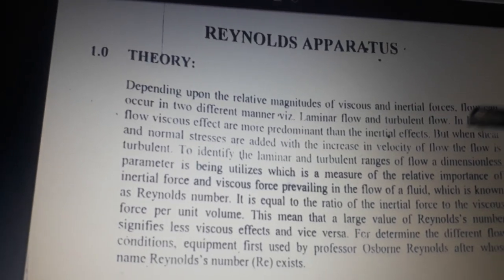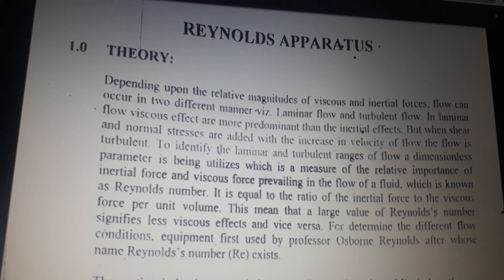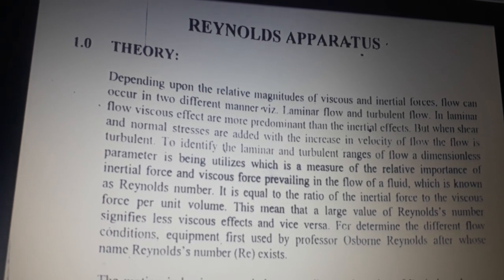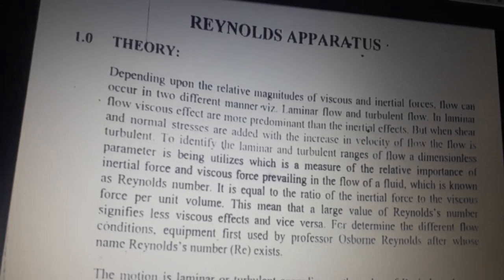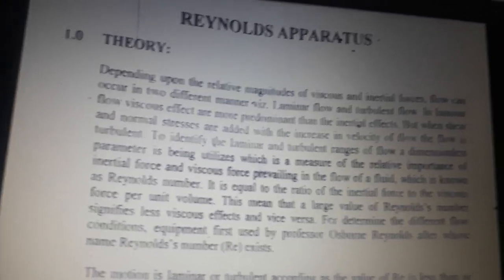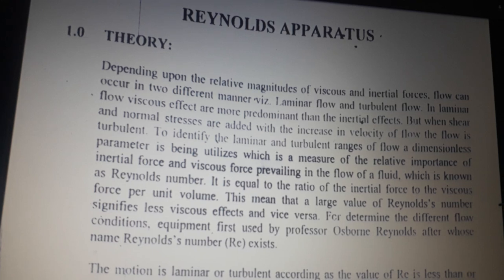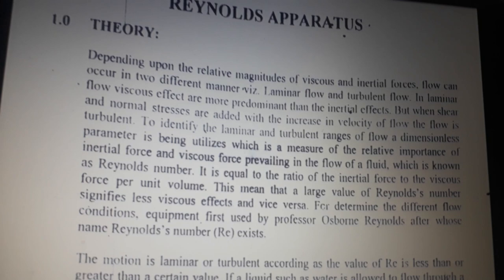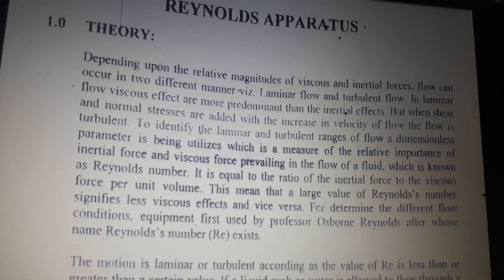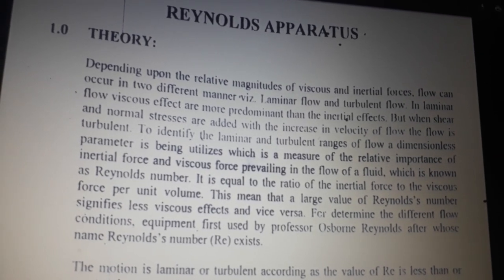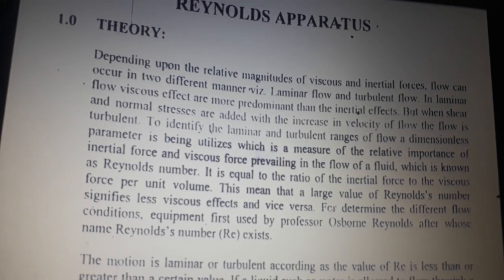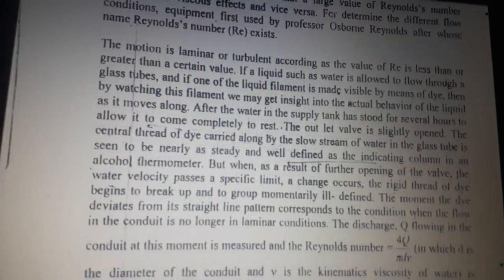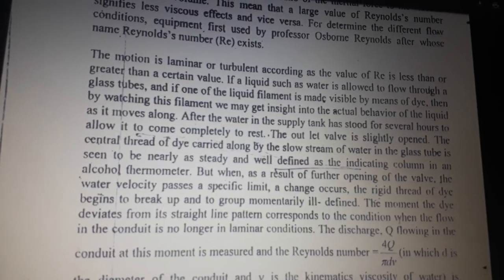Reynolds operators theory: depending on relative magnitudes of viscous and inertial forces, flow can occur in two different manners — laminar flow and turbulent flow. In laminar flow, viscous effects are predominant over inertial effects. When shear and normal stresses are added with increase in velocity, the flow becomes turbulent.